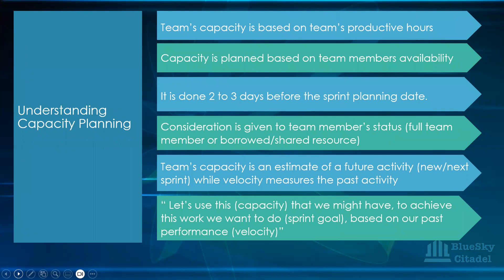We can frame it like this: 'Let's use the capacity we might have in order to achieve this work that we want to do' — which is your sprint goal — 'based on our past performance.' That's your velocity. You're planning for future work you need to do in the next sprint, using your capacity and informing it with velocity to forecast what you can commit to.